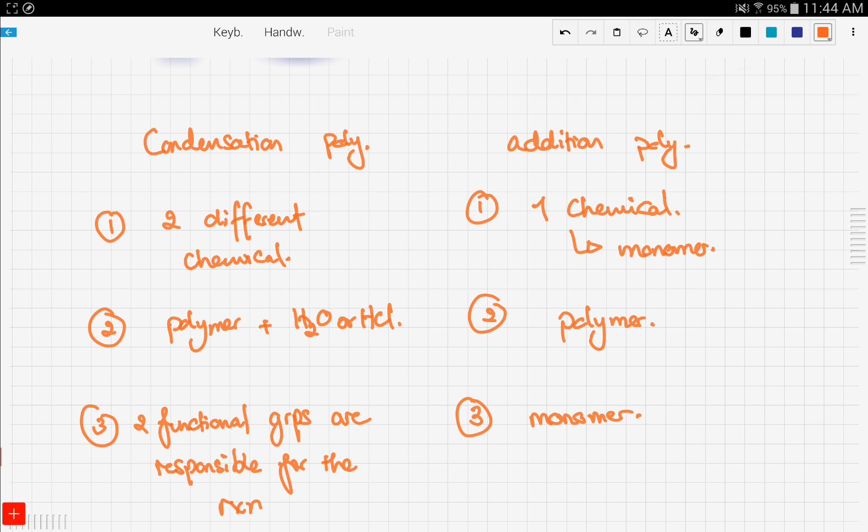So this is kind of a compare-contrast in order to get you to know the idea of condensation polymerization, how is it different from addition polymerization. So what you need to keep in mind is that we have two different chemicals, and those two different chemicals have two functional groups. And you also have to note that we release water, or HCl, that's why it's called condensation polymerization.